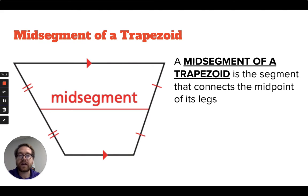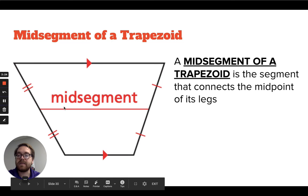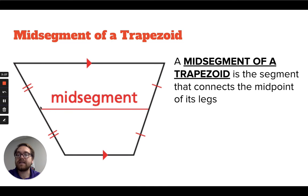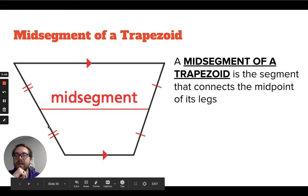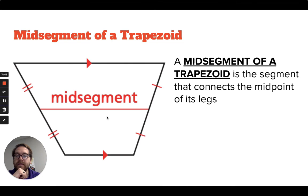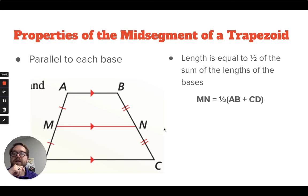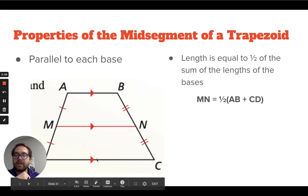We'll also look at the mid-segment of a trapezoid. The mid-segment connects the midpoints of its legs. With bases at top and bottom and legs on the sides, the mid-segment runs through the trapezoid connecting the exact middle of each leg. Since it connects the midpoints, it cuts each leg in half, so each half of each leg is congruent. The first property of the mid-segment is that it's parallel to each of the bases — mid-segment MN is parallel to both bases.